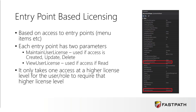For entry point-based licensing, it's actually based on your access to the entry points or menu items in the system. Your menu items — displays, outputs, and actions — if you go and look at those in the AOT, they have two different parameters on them: the maintain user license and the view user license. Each of these is going to have a corresponding license attached to it. Based on the licensing that the user has to that entry point, it would dictate the license they're required to have. If the user has create, update, or delete access to the menu item, they're going to be required to have whatever license is in the maintain user license. If the user only has read access, they're only going to be required to have what's in the view user license. When Microsoft is going through and determining the license requirements, it's looking at all the different entry points that the user has access to, looking at all the view and maintain user license requirements, and then determining what license that user is going to be required to have. It only takes one access at a higher license level for the user or role to require that higher level license.